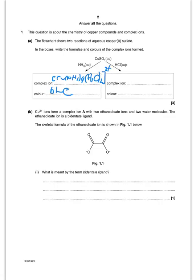For the next one you're going to make CuCl4 and the charge on that is going to be 2 minus. The colour for that is going to be yellow.